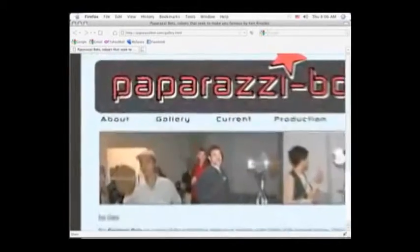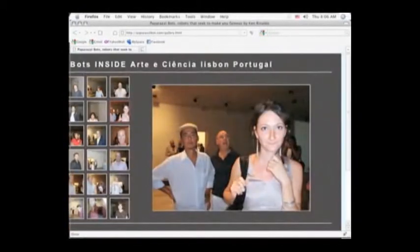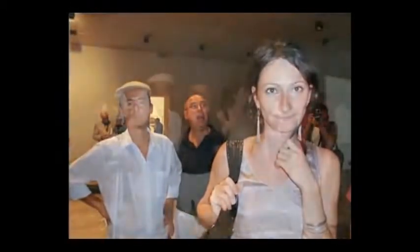The paparazzi robots seek one thing, which is to capture photos of people and to make these images available to the press and the World Wide Web as a statement of culture's obsession with the celebrity image and especially our own images. Each autonomous robot makes the decision to take the photos of particular people while ignoring other humans in the exhibition, based on such things as whether or not the viewers are smiling or the shape of their smile.